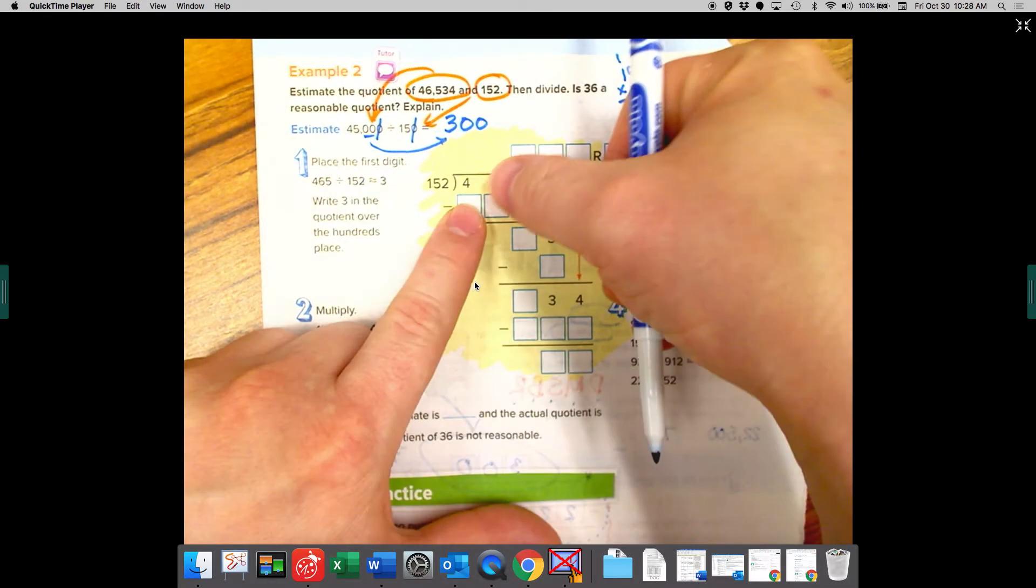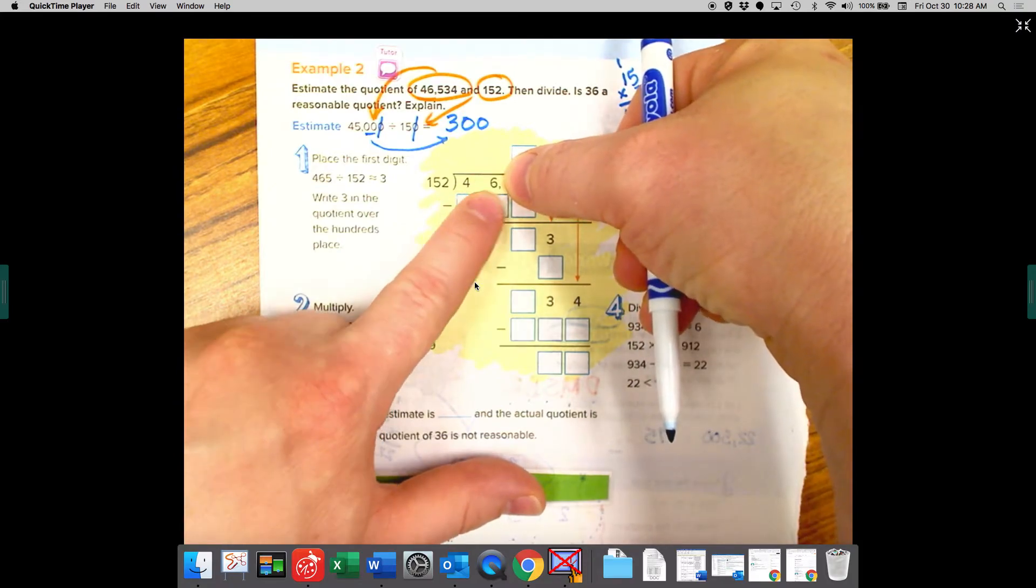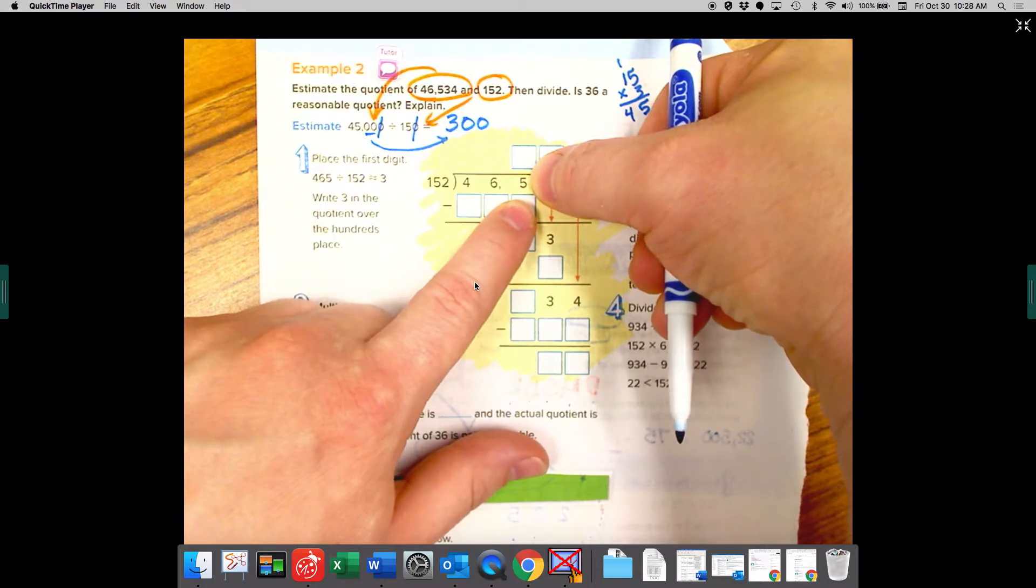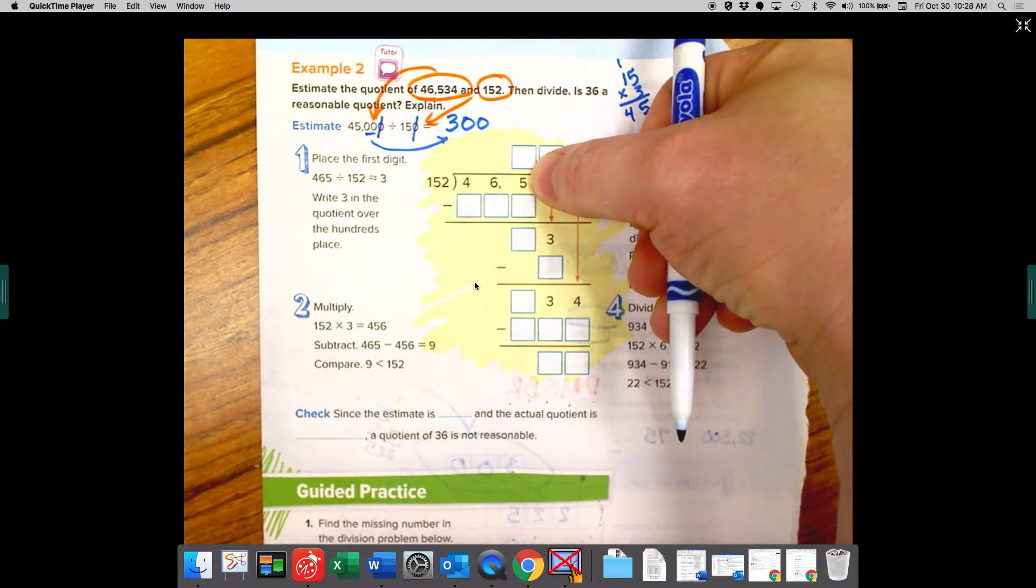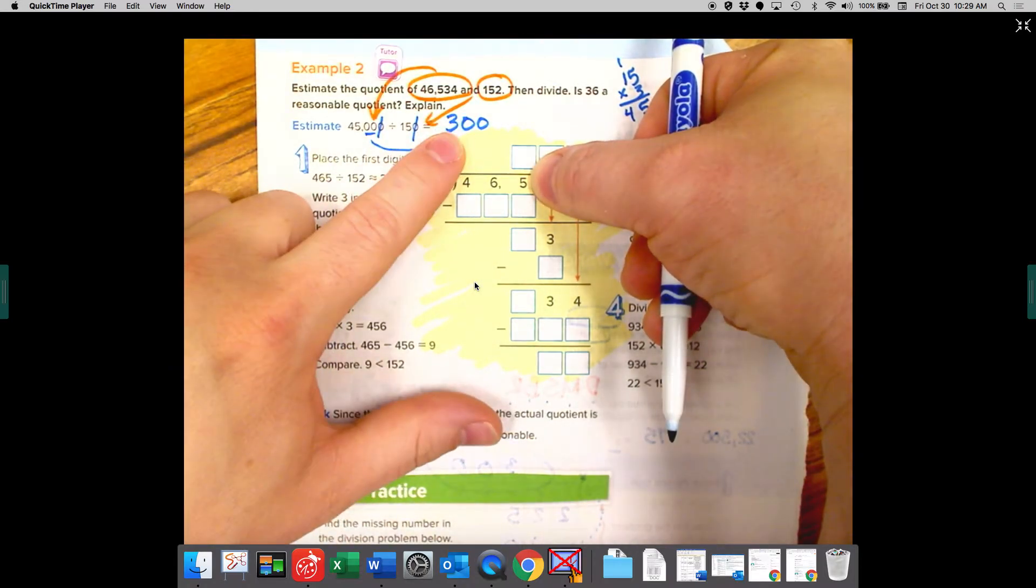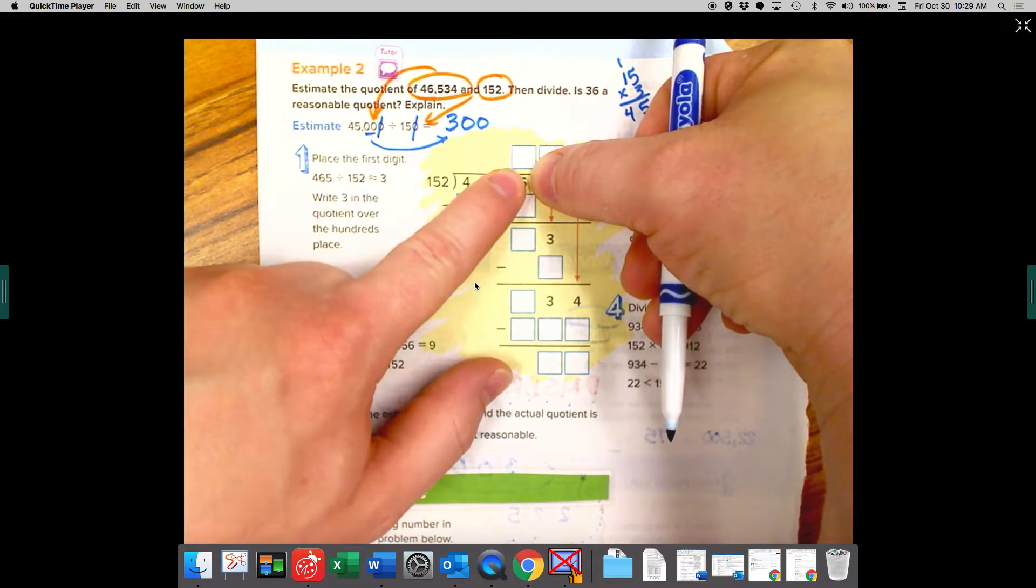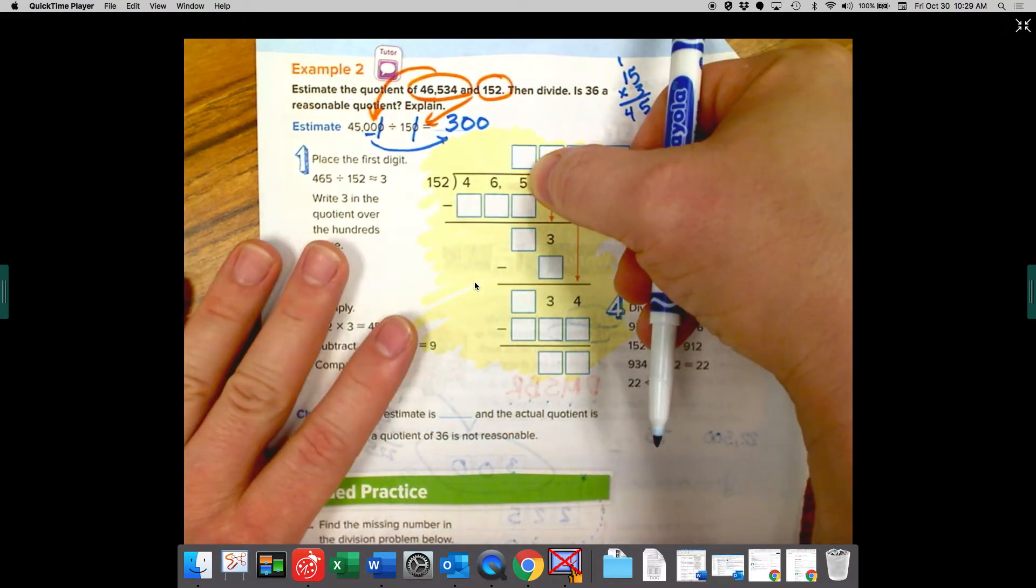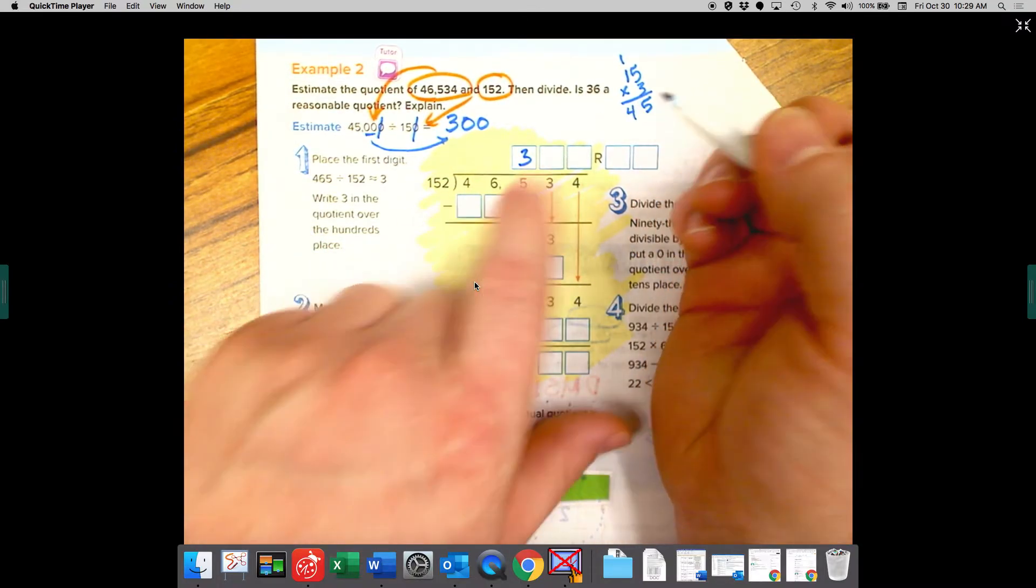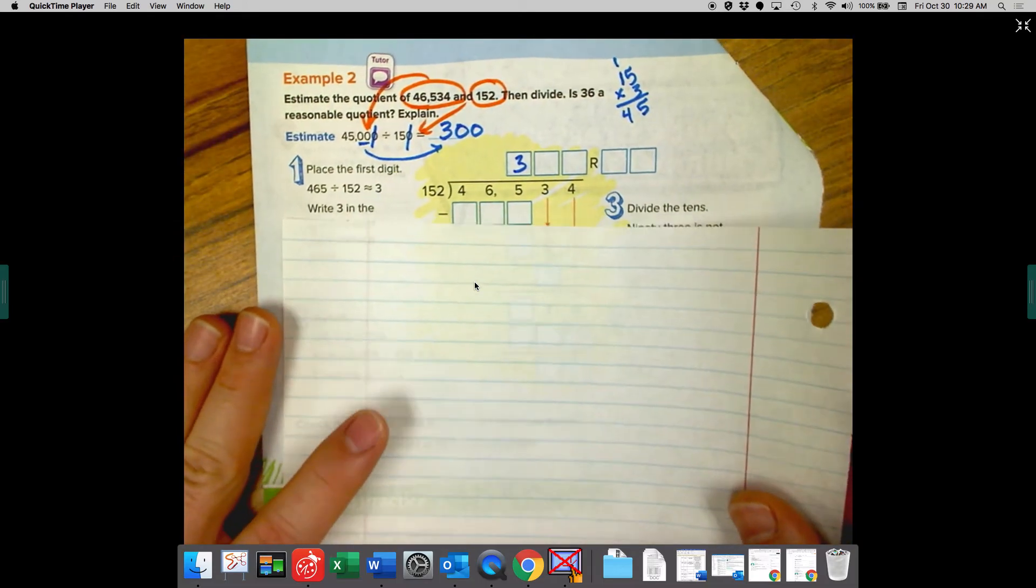So like we did before, 152 doesn't fit into four, doesn't fit into 46, but it does fit into 465. We just have to think about how many times do we think it's going to go in there? Well, if we know our estimate is 300, why don't we start with the number three and see how close we get? So let's start with the number three. I don't know this in my head. So I'm really going to have to do it either on some scrap paper.